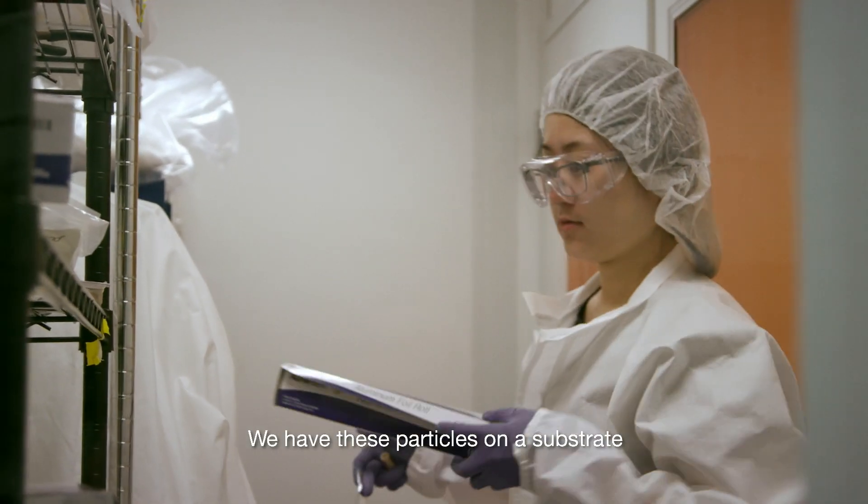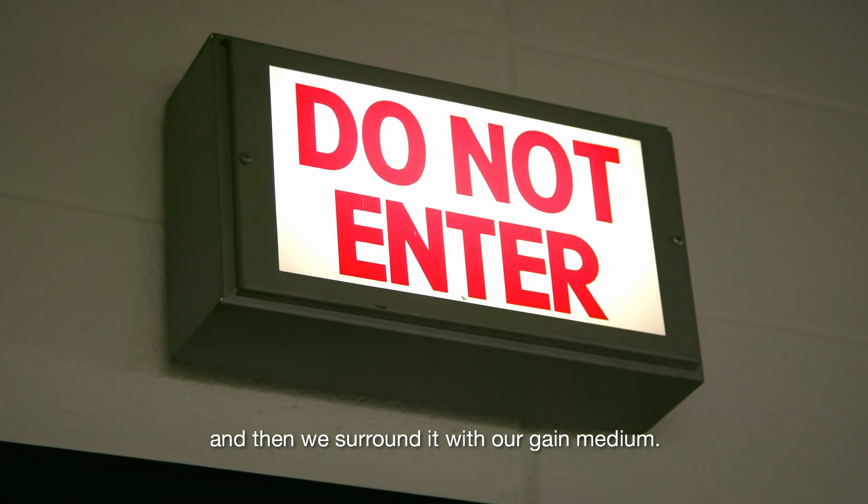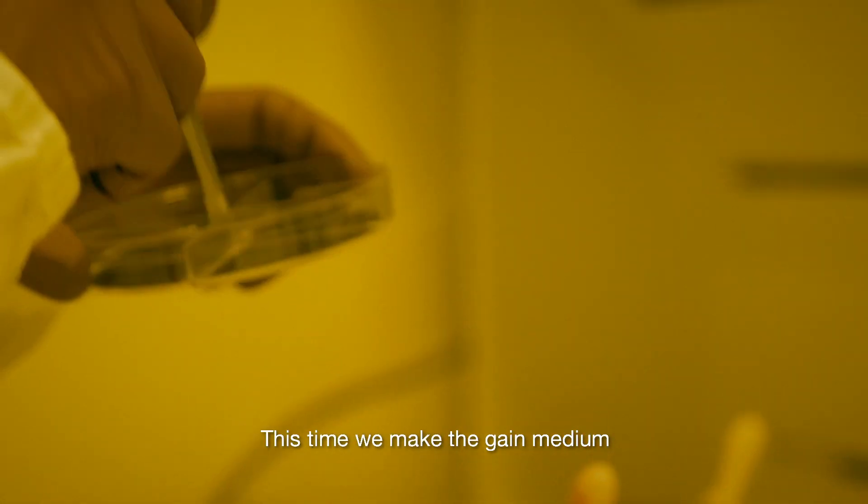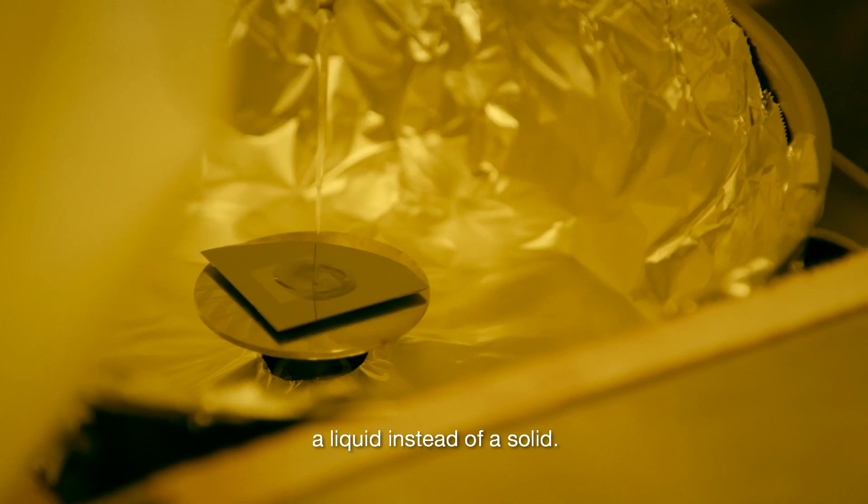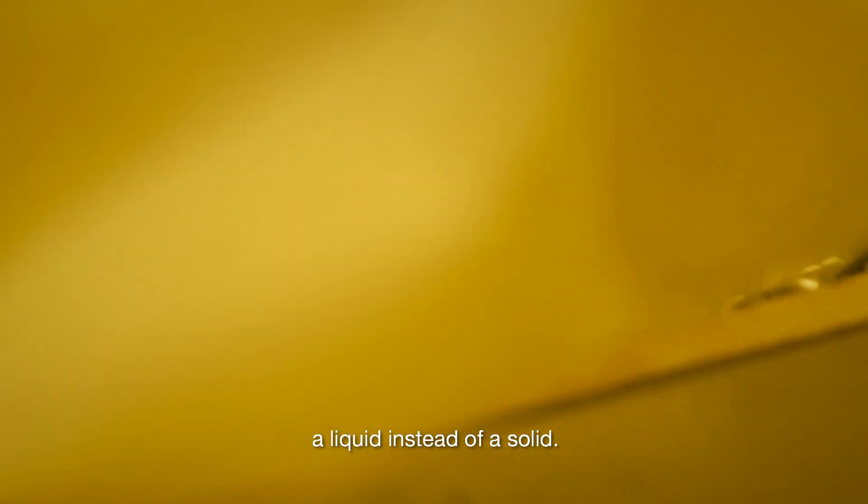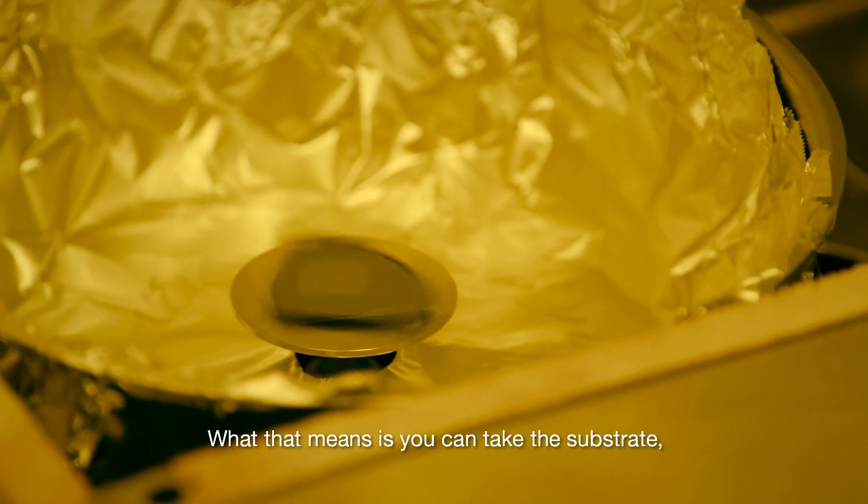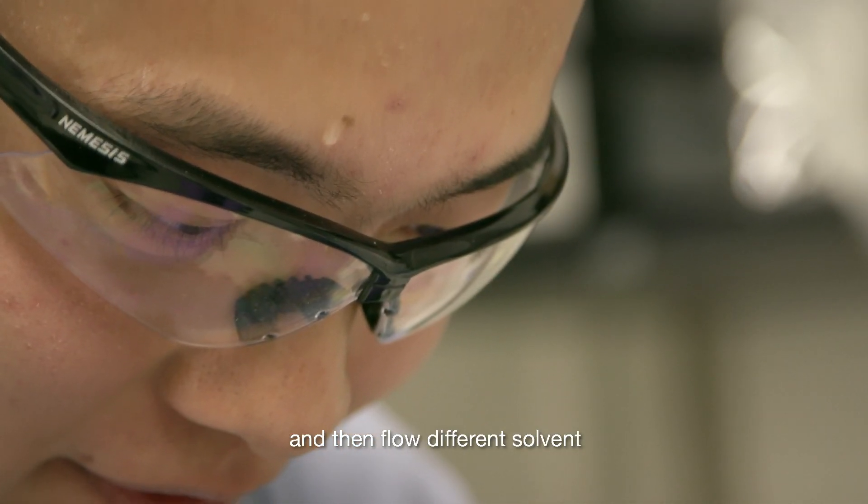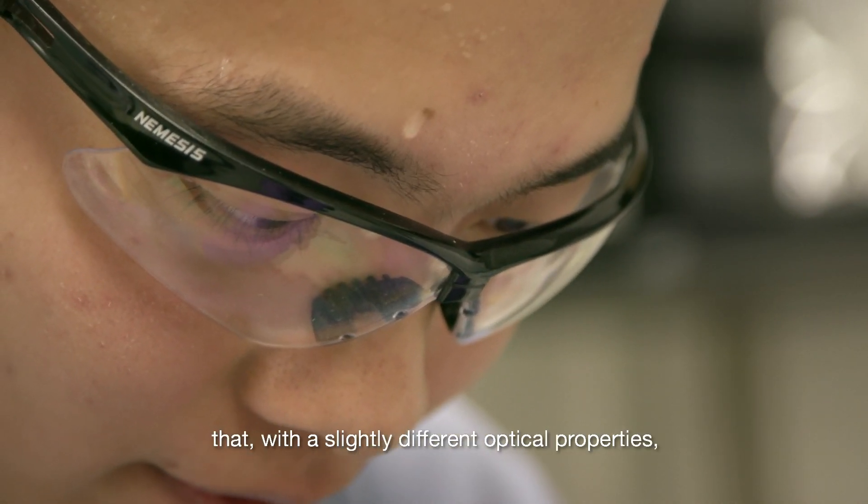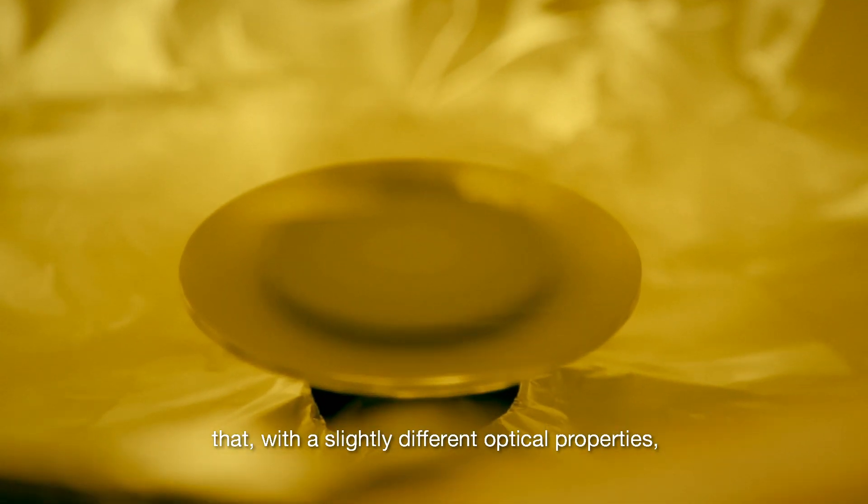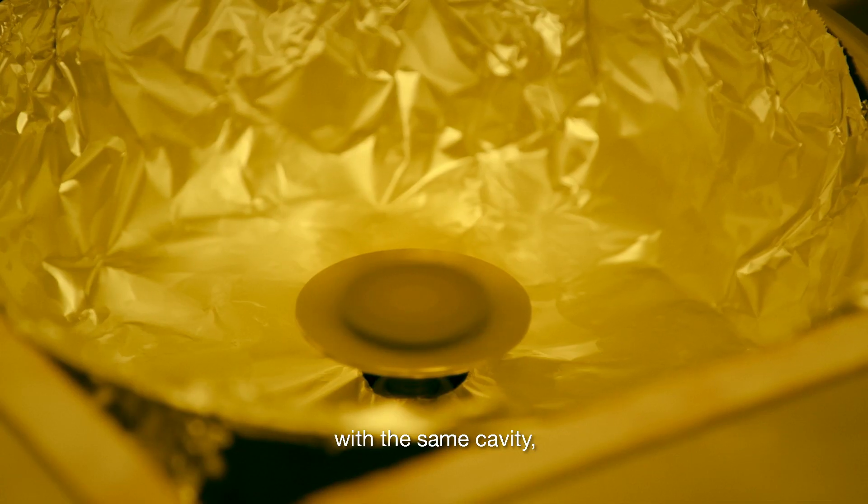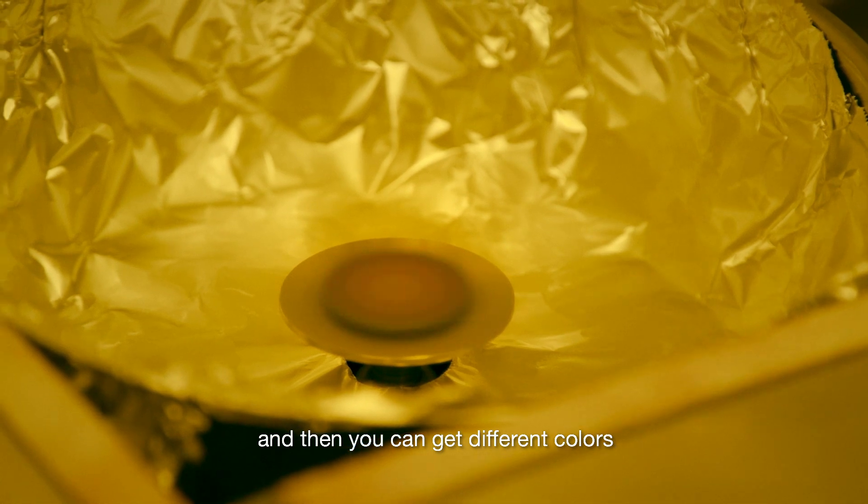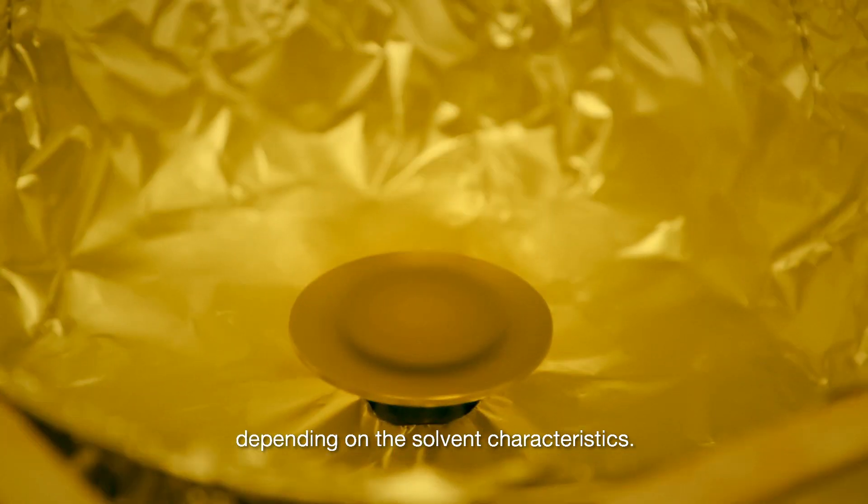We have these particles on a substrate and then we surround it with our gain medium. This time we make the gain medium a liquid instead of a solid. What that means is you can take the substrate, integrate it into a microfluidic channel, and then flow different solvents with slightly different optical properties through the same cavity. And then you can get different colors depending on the solvent characteristics.